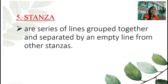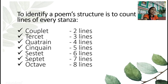The fifth one is stanza. Stanzas are a series of lines grouped together and separated by an empty line from other stanzas. To identify a poem's structure, count the lines of every stanza. If we have two lines, we call it couplet; three lines, tercet; four lines, quatrain; five lines, cinquain; six lines, sestet; seven lines, septet; eight lines, octave.